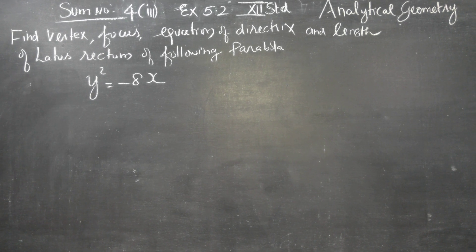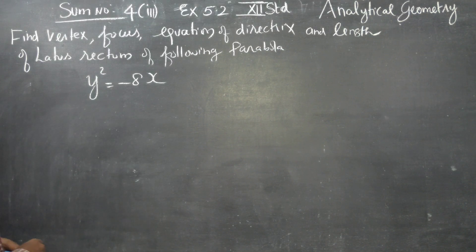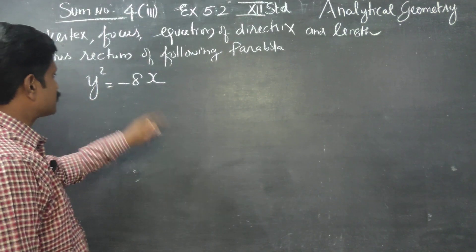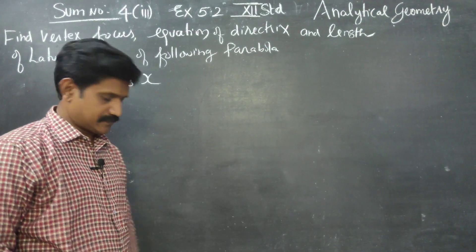Dear 12th standard students, in chapter number 5, analytical geometry, sum number 4, third subdivision: find the vertex, focus, equation of directrix, and length of latus rectum of the parabola y squared is equal to minus 8x.